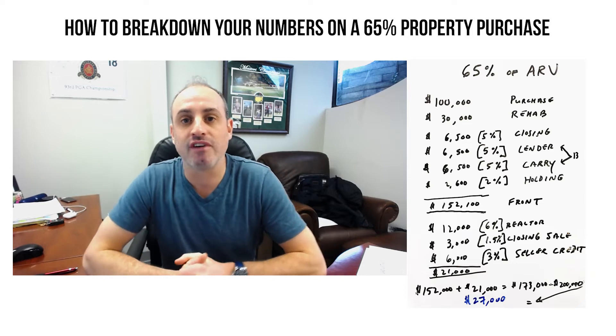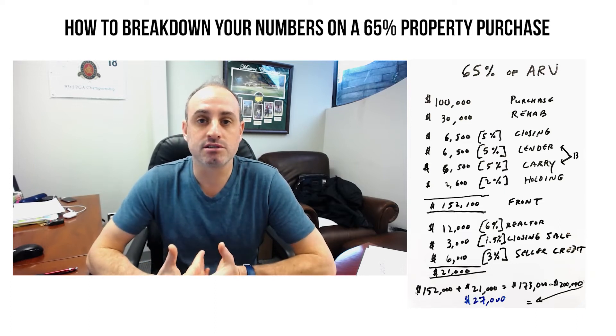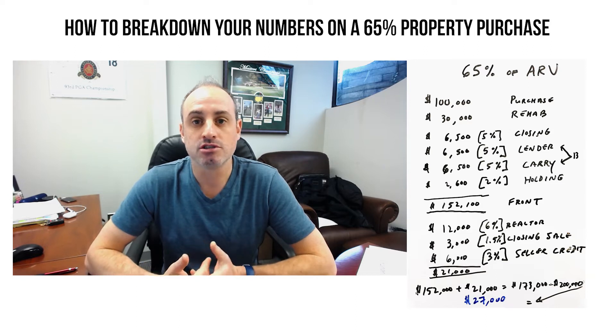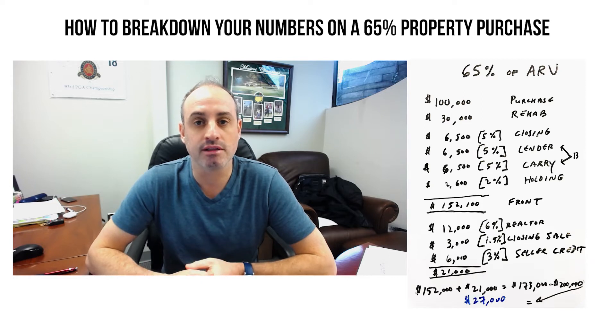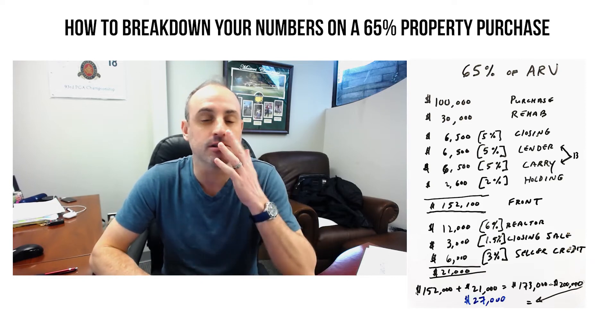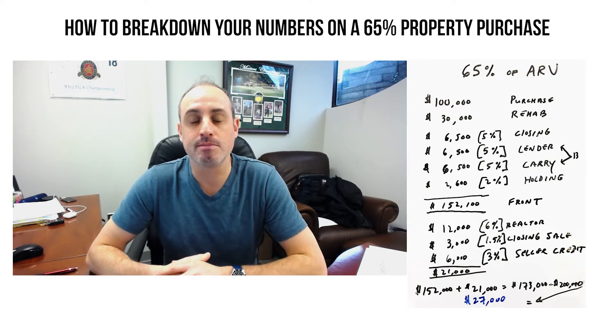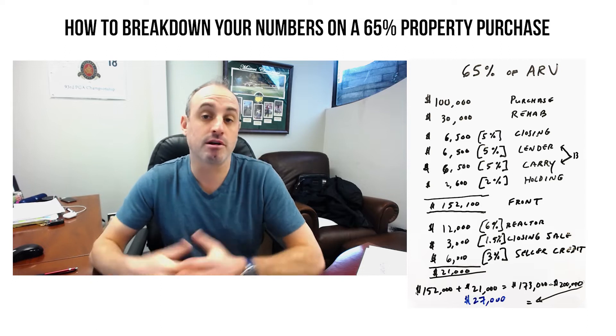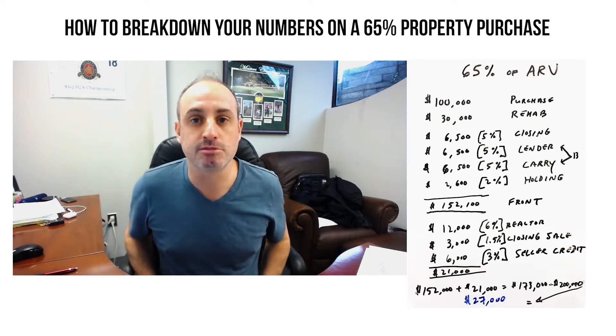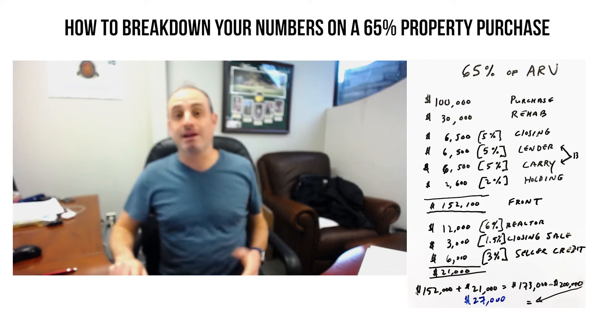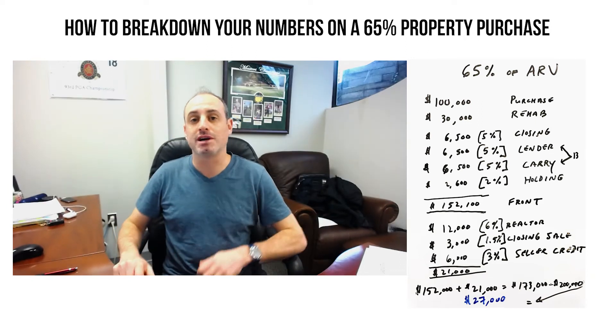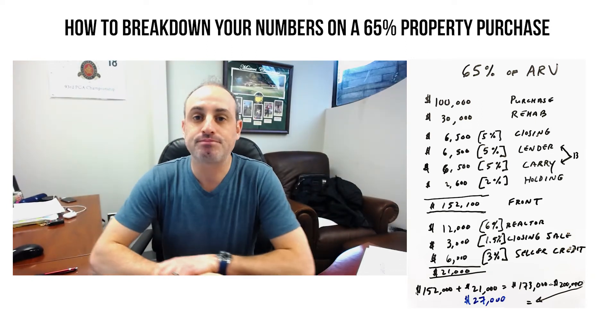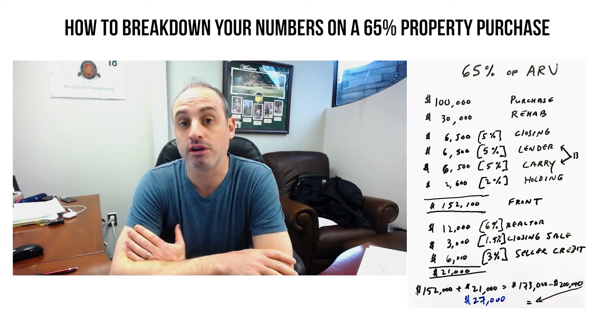Now these could change if you use your own money or if you use a bank or if you use a private lender with different terms. But hear me out as we go through that. So your closing costs are going to be 5%. Transfer, recordation, title insurance, potentially taxes that are due, upfront insurance that you need on the property. No matter if you buy this for cash, hard money, private money, bank, it doesn't matter. The 5% is going to be $6,500.